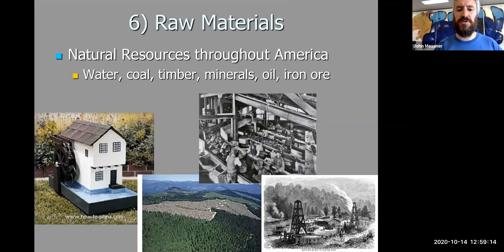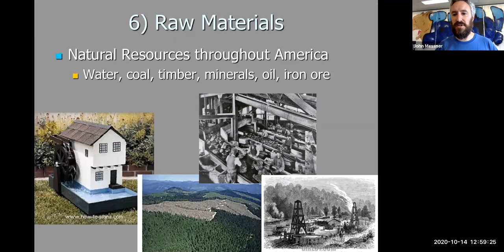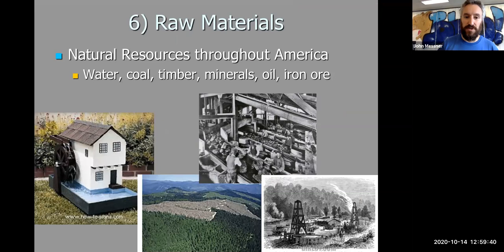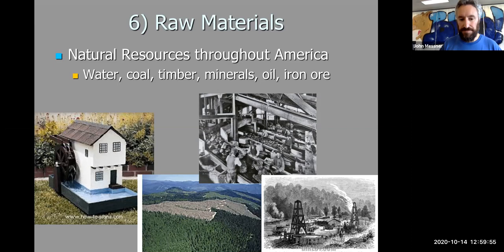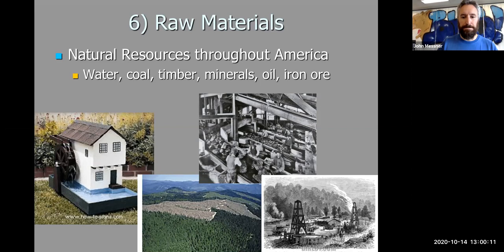Another reason for success economically is our access to raw materials here in this country. From coast to coast there are many resources - whether it's water or coal being mined out. Even in eastern Washington, Roslyn and the Cascade Mountains are rich with coal, and you can still see those old coal mines. We have rich timber resources in our mountain areas, lots of minerals being harnessed out of the earth, and oil discovered in California and Texas that can generate electricity and energy, especially with the success of the automobile. And then iron ore, which we need to convert to steel and make many of our goods.